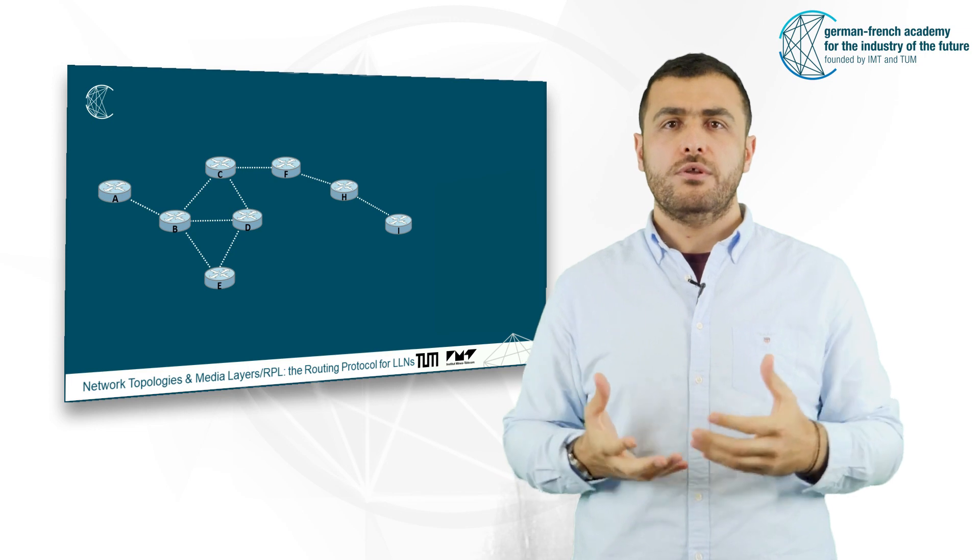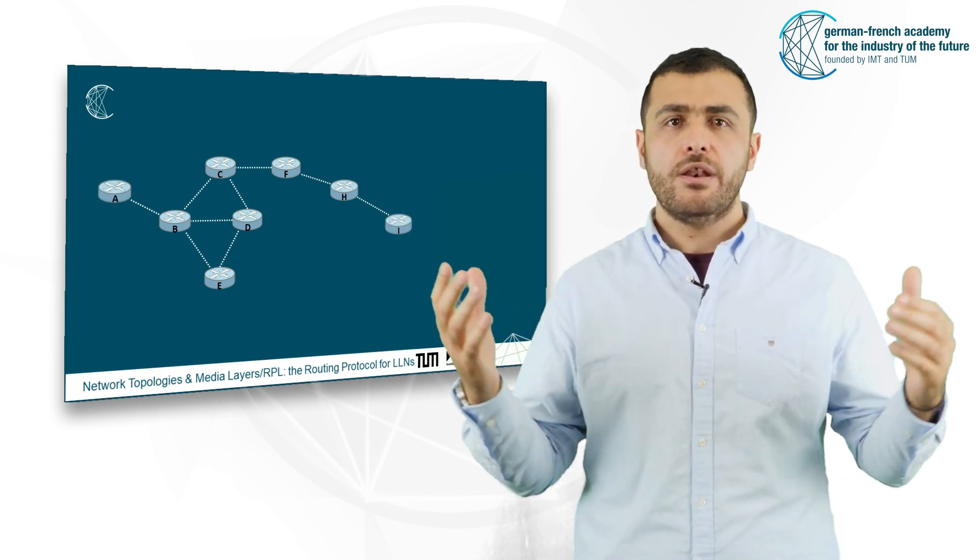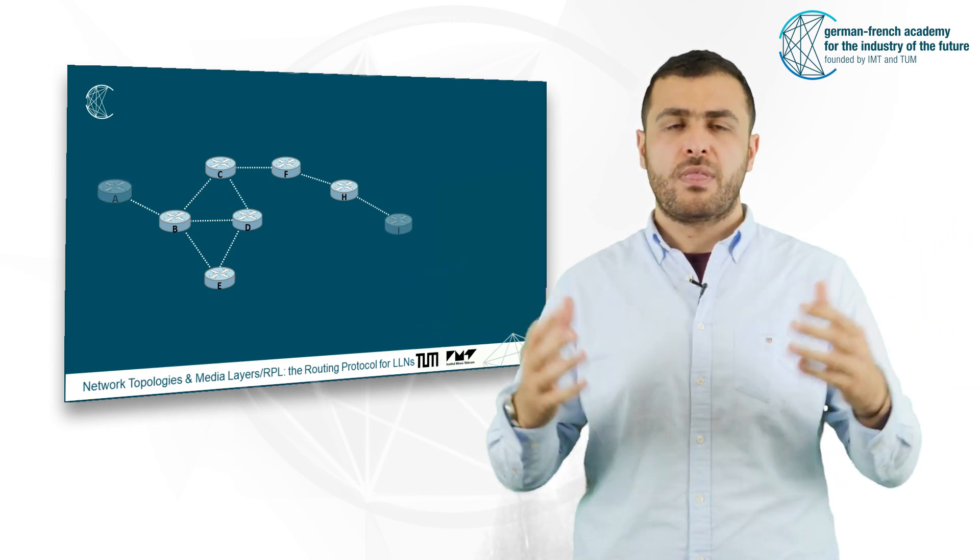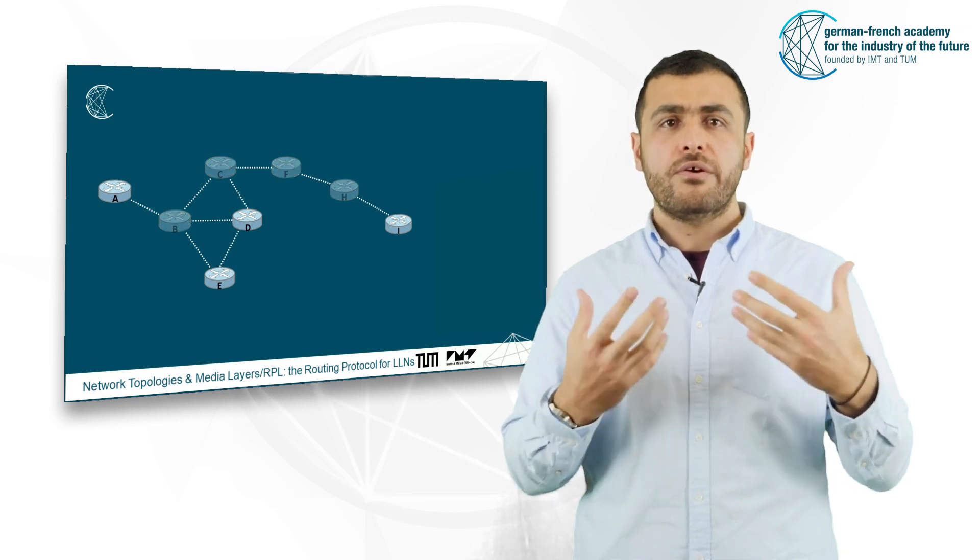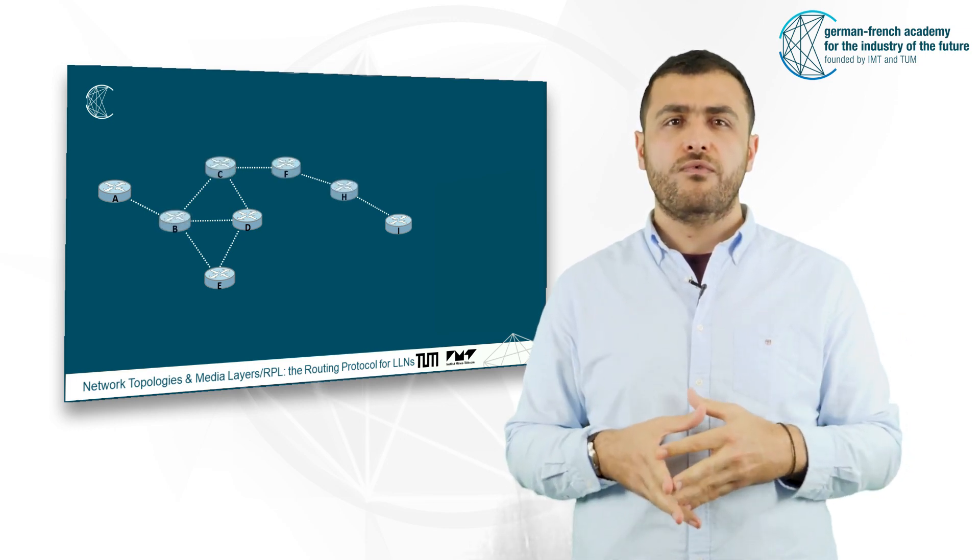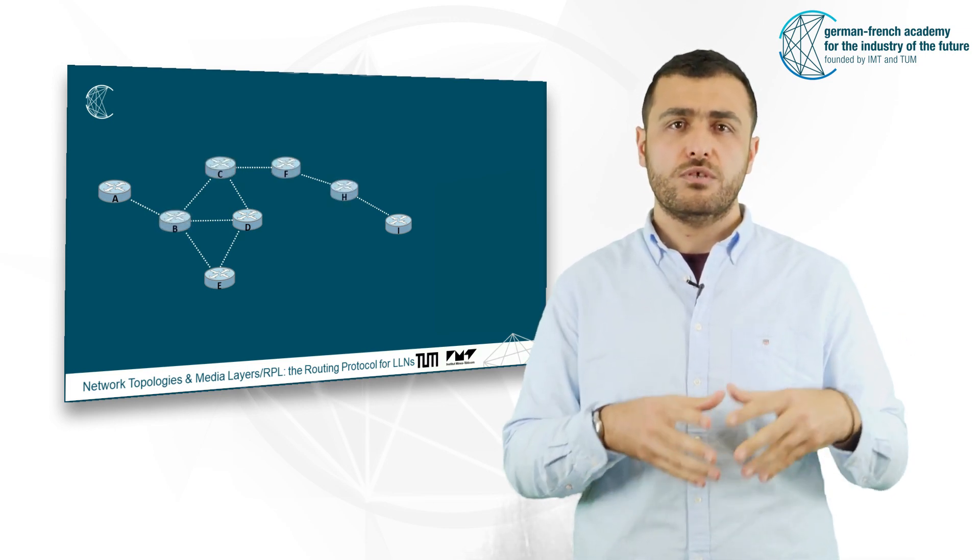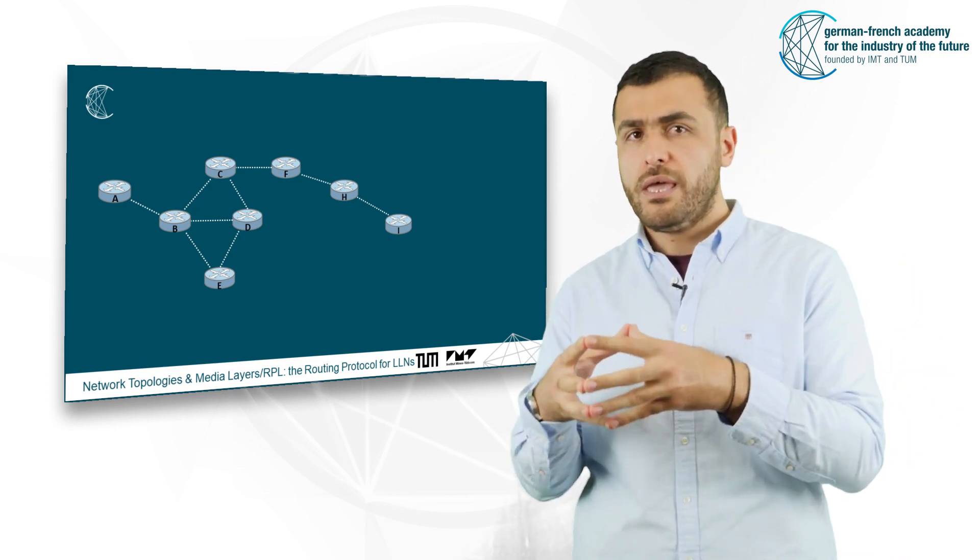In such topology, nodes A and I cannot communicate directly. Thus, they will require relay nodes in the network to forward the packets sent from the source node I to the destination node A.